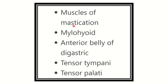The four muscles of mastication are masseter, temporalis, medial pterygoid, and lateral pterygoid. In addition, the trigeminal nerve also supplies the mylohyoid muscle and the anterior belly of the digastric. The digastric muscle has both an anterior belly and a posterior belly, and only the anterior belly is supplied by cranial nerve 5.